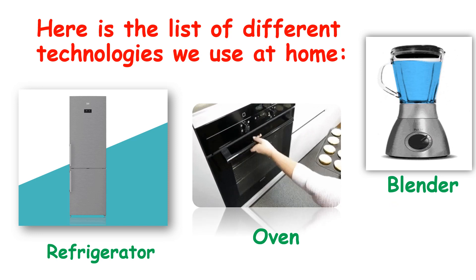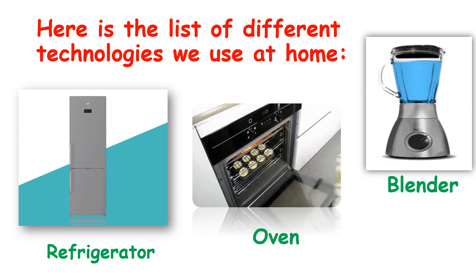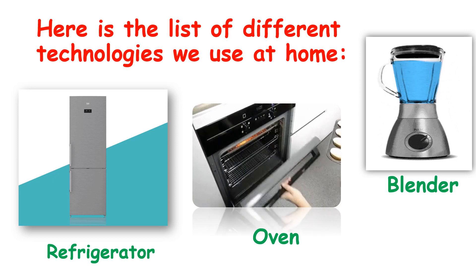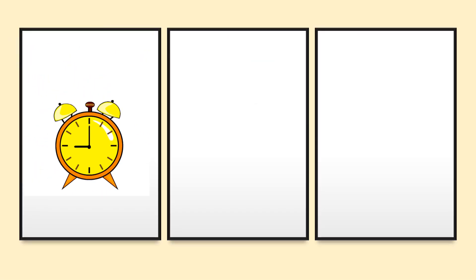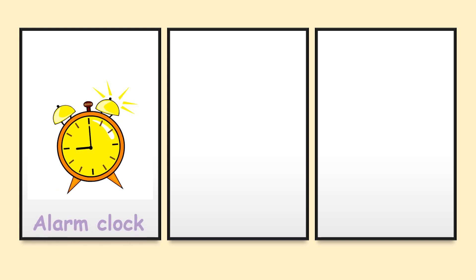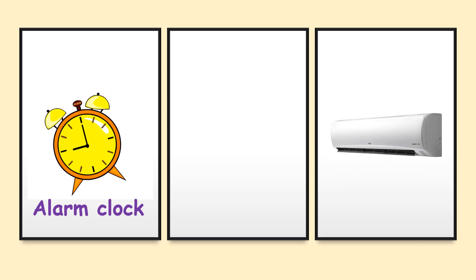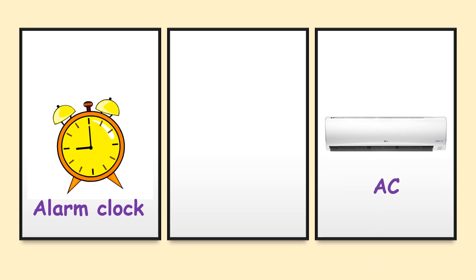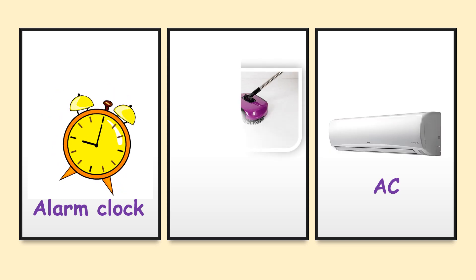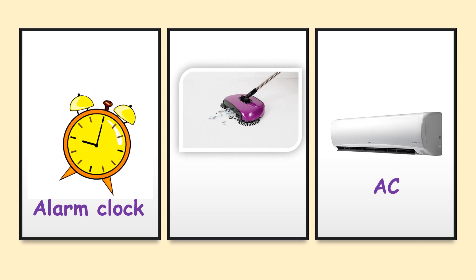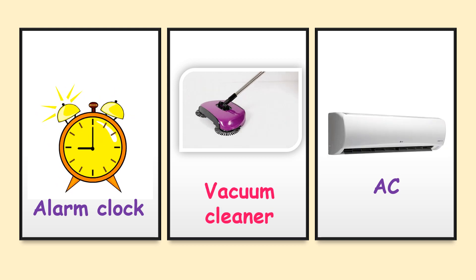Think about what if we used our hands to crush or blend things — it will take quite a long time. Next is an alarm clock. An alarm clock allows us to set a time to wake up. Let's talk about AC — AC controls the temperature accordingly. And what is this? It is a vacuum cleaner. It helps us to clean the house deeply.